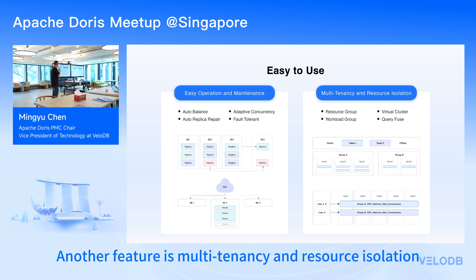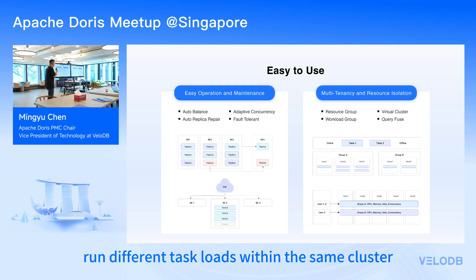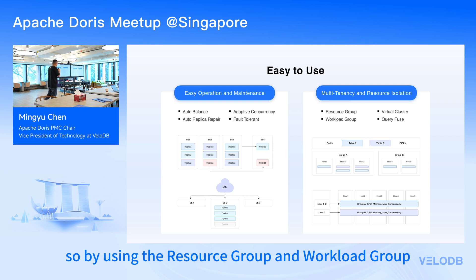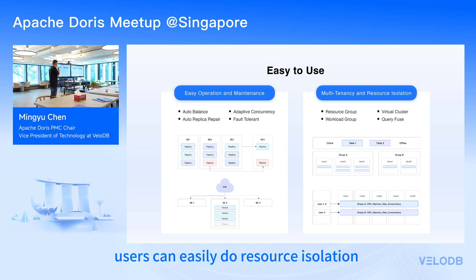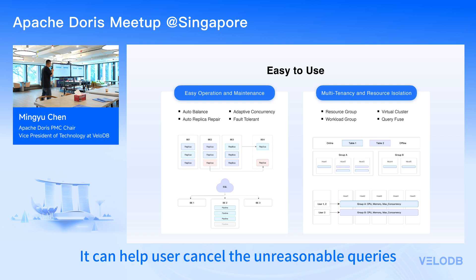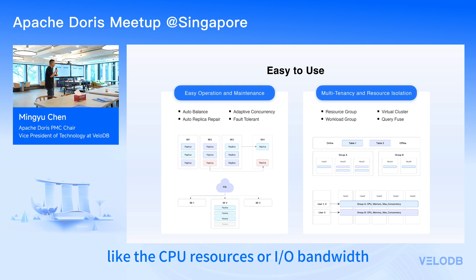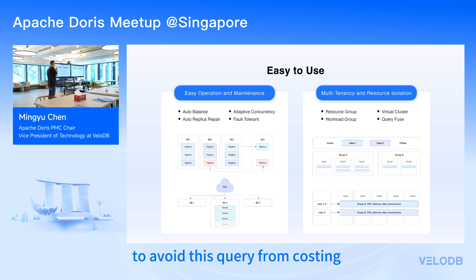Doris supports multi-tenancy and resource isolation, enabling users to run different task loads within the same cluster. By using resource groups and workload groups, users can easily manage resource isolation within a node or between nodes. Doris also provides a query circuit-breaker feature that can cancel runaway queries consuming too much cluster resource, helping increase cluster stability.